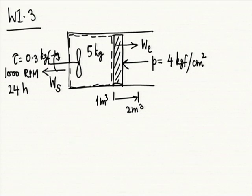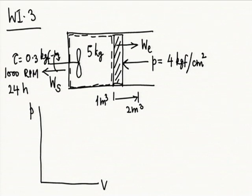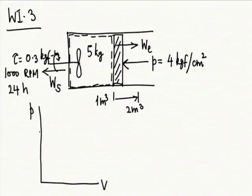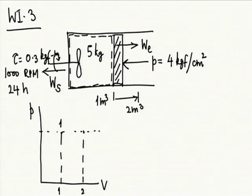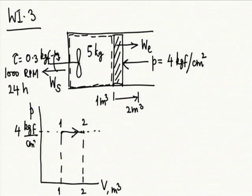I know that pressure and volume are properties, so the pressure-volume part I can show on a state space diagram. Following tradition, I am drawing pressure on the y-axis and volume on the x-axis — absolutely nothing wrong if you do it the other way, but be consistent. It is a constant pressure process, so the process goes from initial state 1 at 1 meter cube to a final state at 2 meter cube, at 4 kgf per centimeter square.